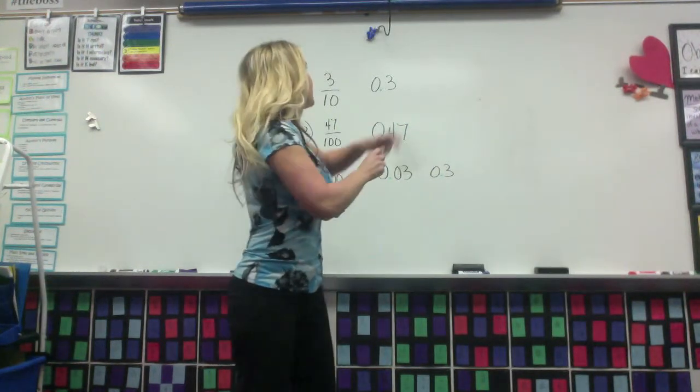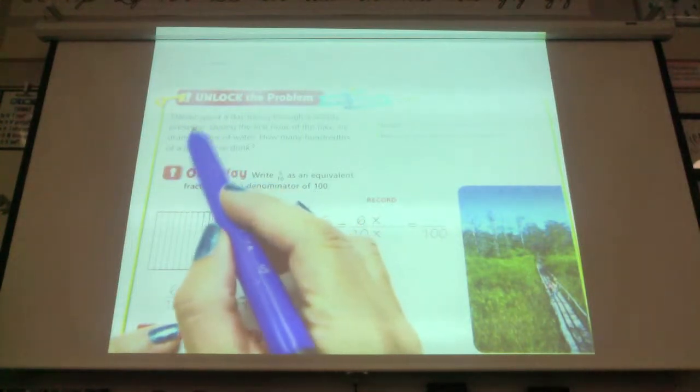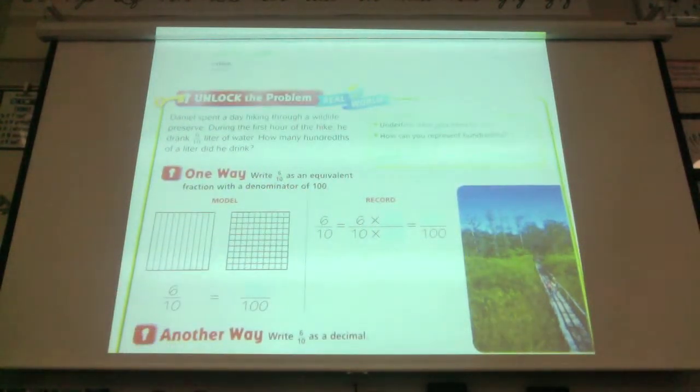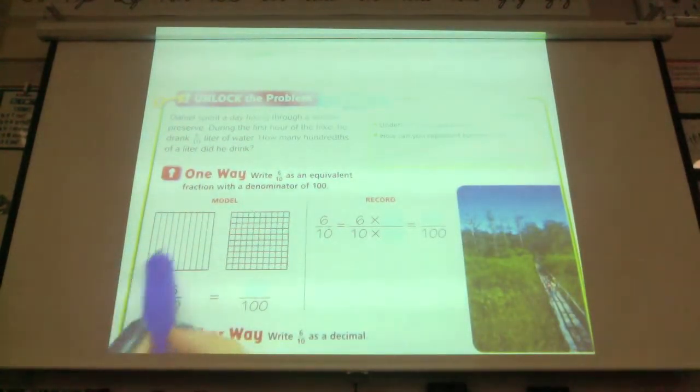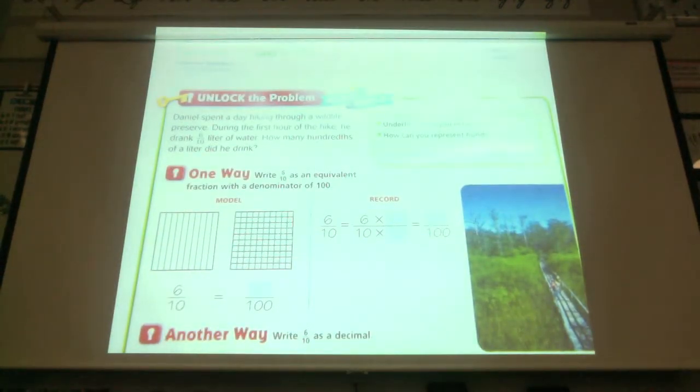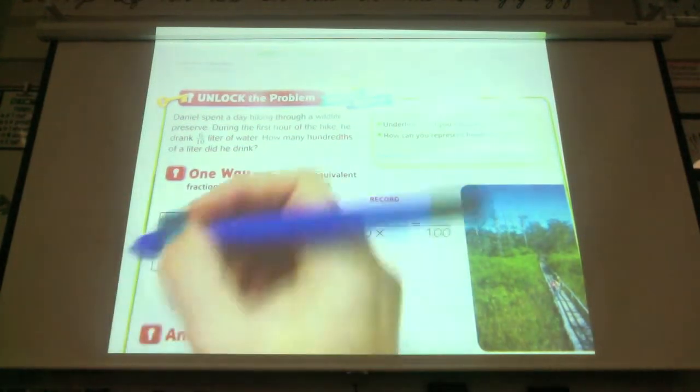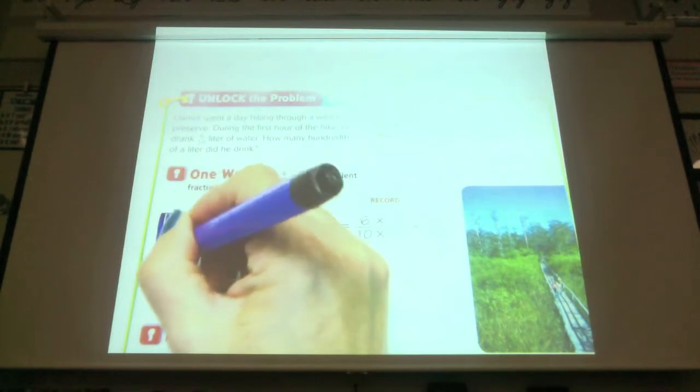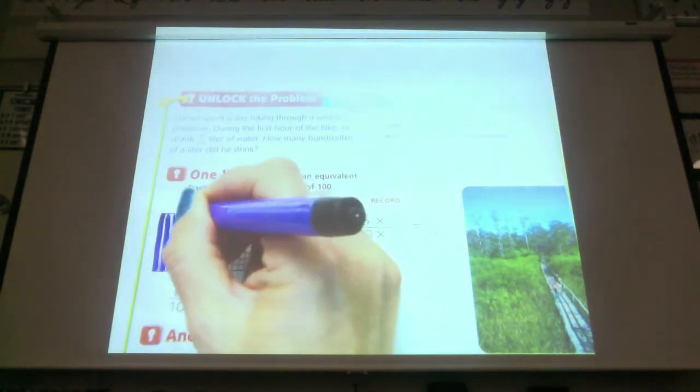The teacher directs students to open their books to lesson 9-3. "Daniel spent a day hiking through a wildlife preserve. During the first hour of the hike, he drank six tenths liter of water. How many hundredths of a liter did he drink?" The teacher asks how many sections to shade on a tenths model. Brian answers six, and the class agrees. The teacher counts and shades: "One, two, three, four, five, six."